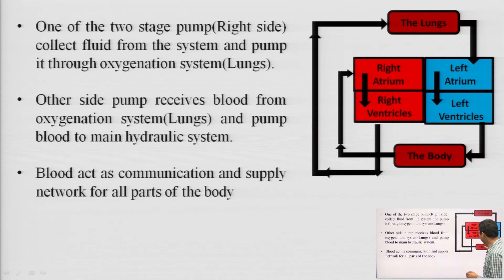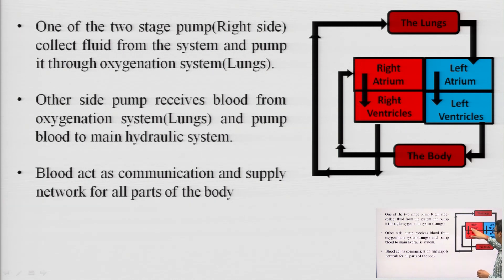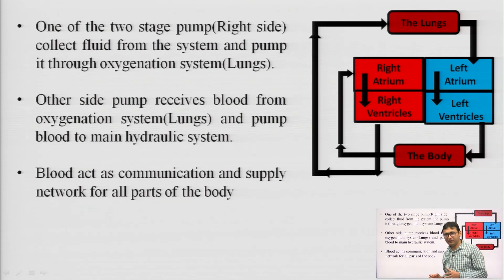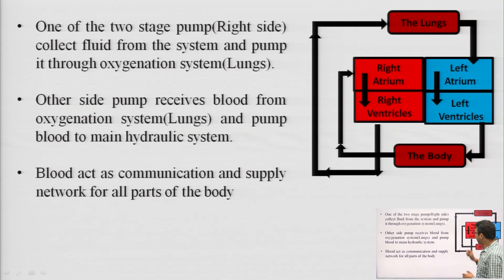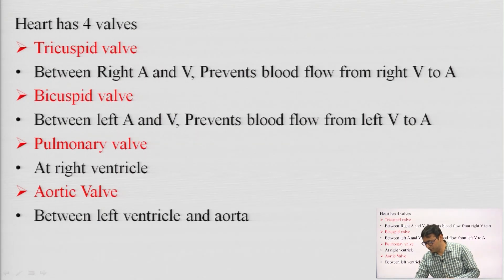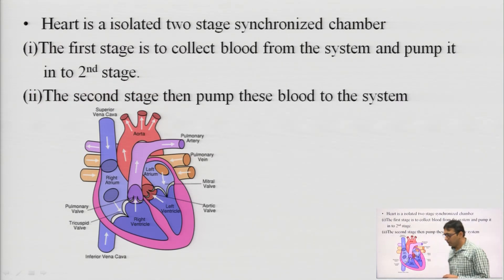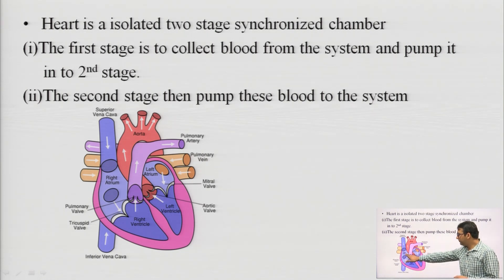In some parts of the system, the diameter of the arteries changes to control pressure. In this natural system, we cannot put different sizes of pipes, so the size of the arteries changes according to the requirement. Suppose you are doing heavy exercise or you are tensed — the arteries automatically expand so that more blood can flow through them and supply to the organs as per the requirement.